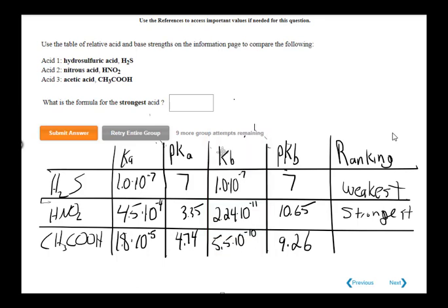And the weakest acid, H2S, has the strongest conjugate base among these three.